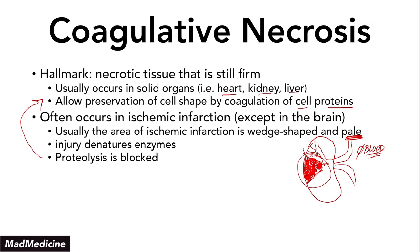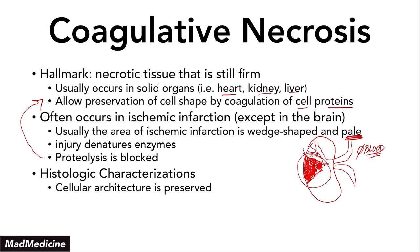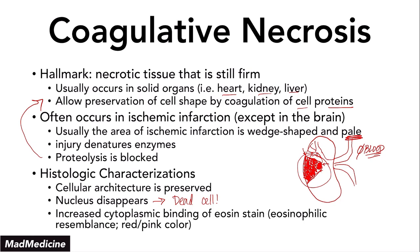Proteolysis is blocked, proteins will coagulate. When you're talking about histology, you're going to see that the cellular architecture is actually preserved — which we've already talked about — but the nucleus is going to be gone. Why? Because this is already a dead cell on a large scale. Remember: necrosis. You're also going to see increased cytoplasmic binding of the eosin stain and you're going to see a reddish-pinkish color, meaning it's going to be eosinophilic. The cytoplasmic binding of the eosin stain will be increased.